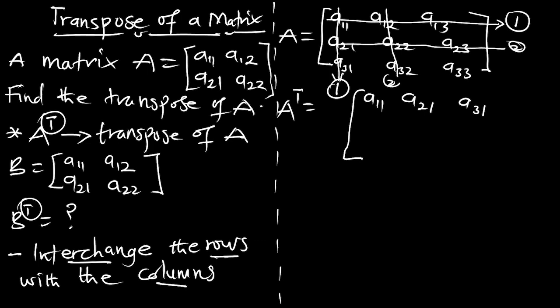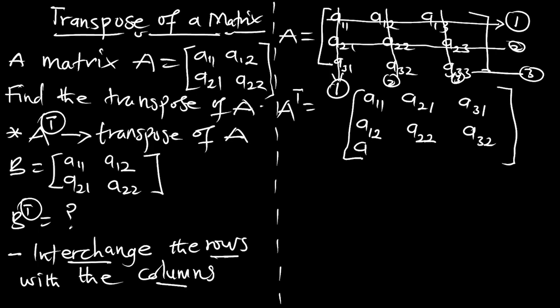Column two is going to replace row two, giving us A12, A22, A32. Then column three is going to replace row three, giving us A13, A23, A33. So this is the transpose of matrix A, where the first column replaces the first row, the second column replaces the second row, and the third column replaces the third row.